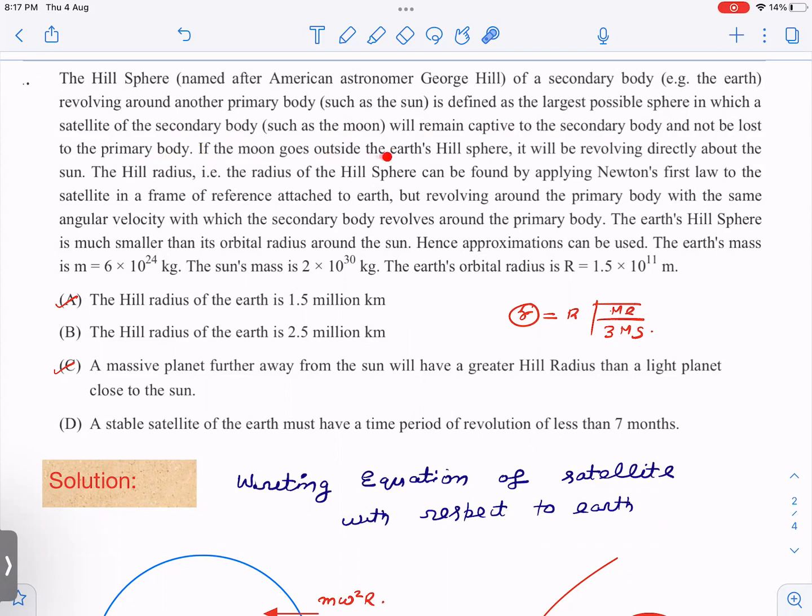If the moon goes outside the Earth's Hill sphere, it will be revolving directly about the sun, not about the Earth. Then the Hill radius, the radius of the Hill sphere, can be found by applying Newton's first law to the satellite in a frame of reference attached to Earth.